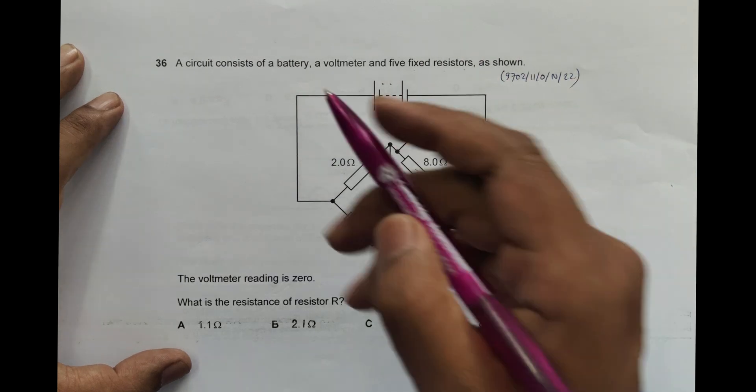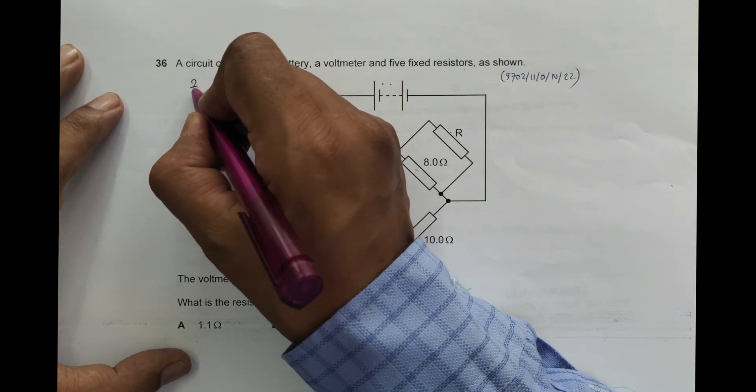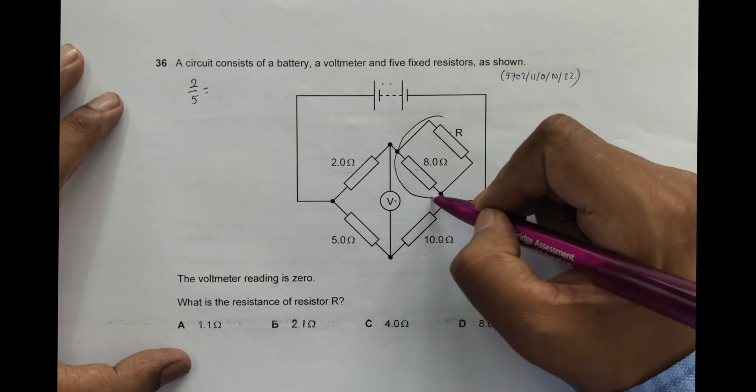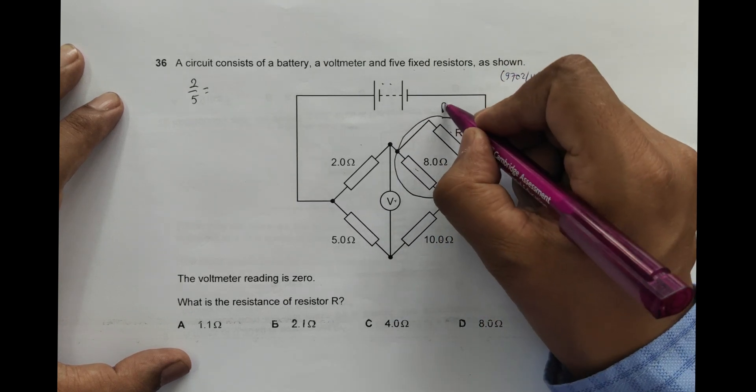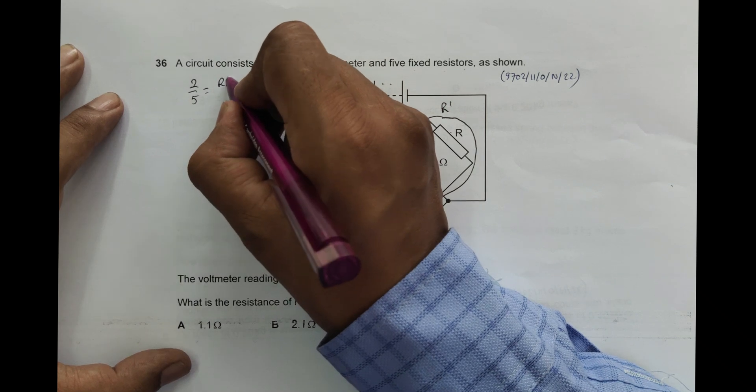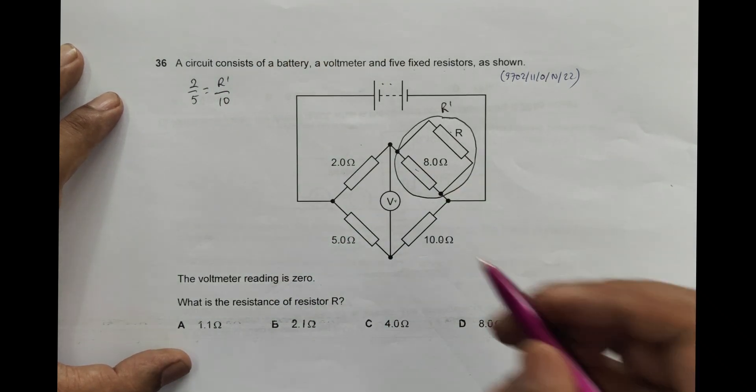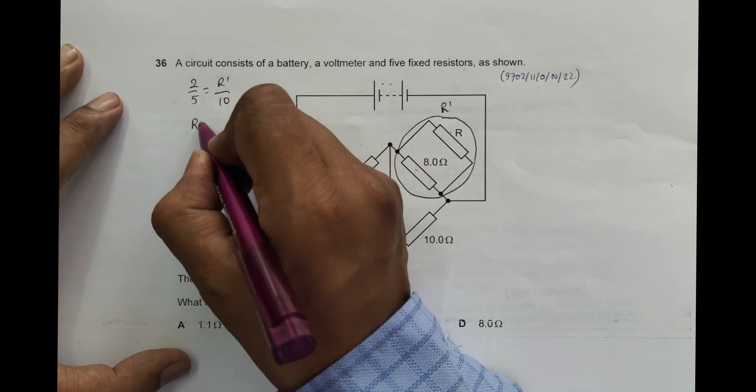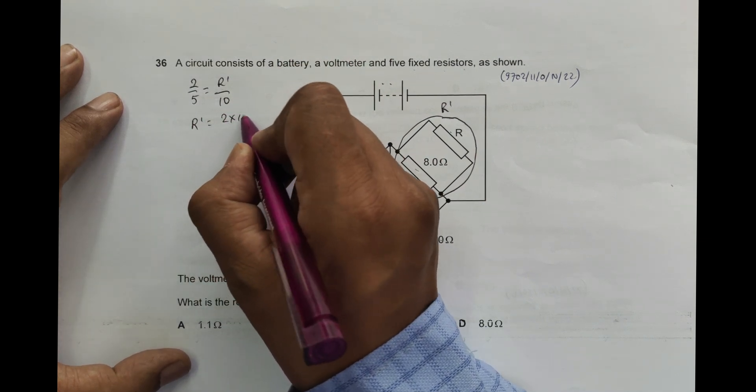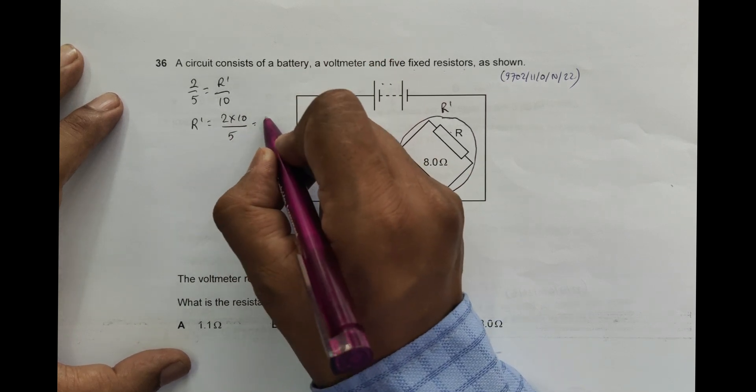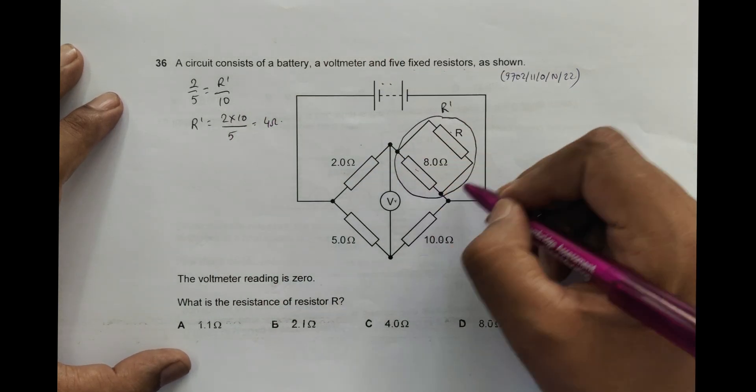So that means we must have 2 by 5 should be equal to—let me see—the combined resistance here R prime by 10. This is the typical relationship of the Wheatstone bridge. So this gives me R prime is equal to 2 into 10 by 5, 2 tens are 20 by 5 equal to 4 ohm. So this R prime whole is 4 ohm.